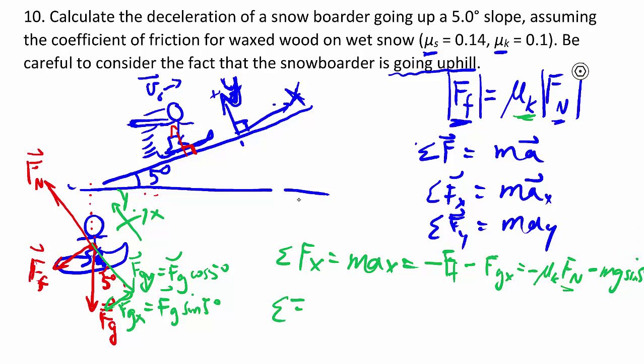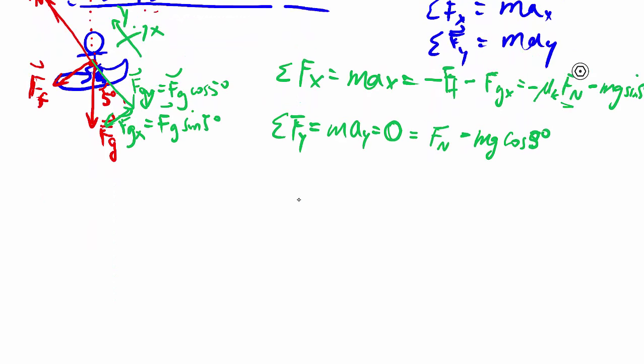Sum of forces y equals may, which because of the way we chose the coordinate axis, we know ay is zero. And then in terms of forces, we have two forces with fn pushing in a positive y direction away from the slope. And then we have the y component of fg, which pulls down, so we have mg cosine 5 degrees. So from here, we can tell already, solving for fn, putting it to one side, we get mg cosine 5 degrees.